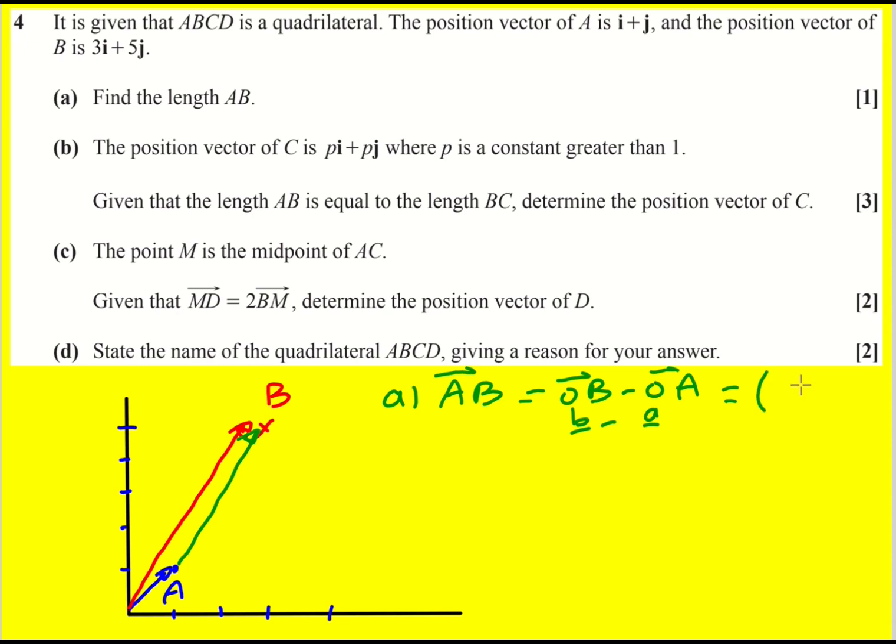In any case, we're going to get 3, 5, I'm writing it in vector form now, minus 1, 1. But you don't have to, which gives you 2, 4, or 2i plus 4j. That means that a, b, you can use Pythagoras' theorem.